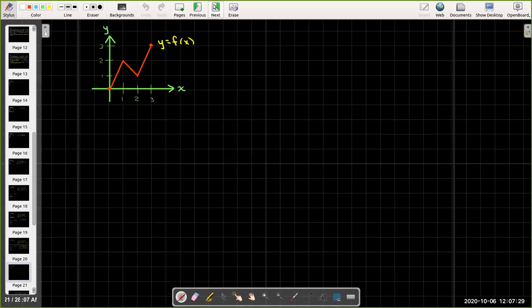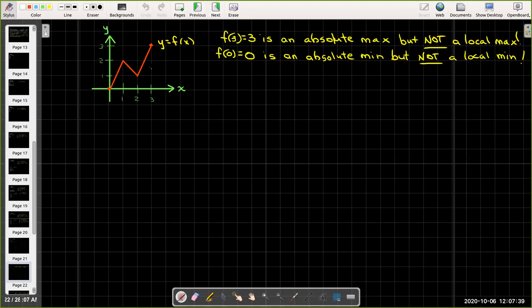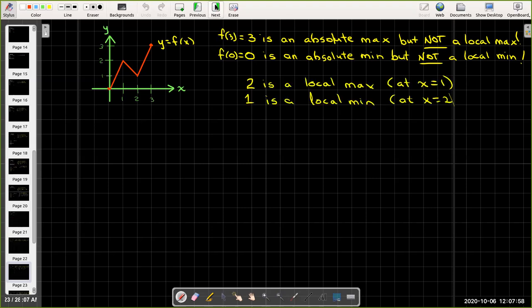Here's another example, which is piecewise defined, just made up of line segments. We can see that f(3) is the highest point overall. It's an absolute max, but it can't be a local max because there's no points to the right of it. And f(0) is an absolute min, but it's not a local min. Here at x equals 1, f(1) equals 2 is a local max. And at x equals 2, f(2), which equals 1, is a local min.